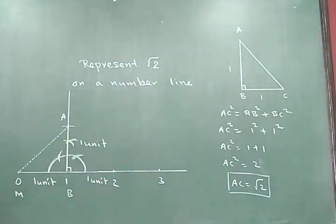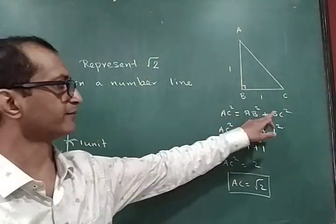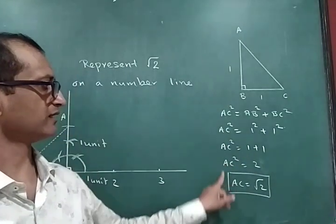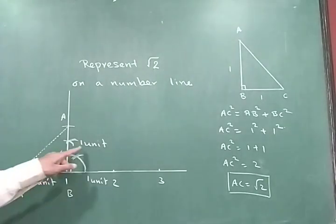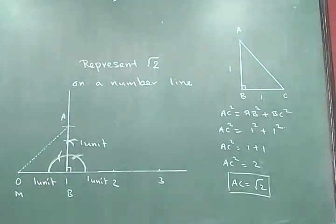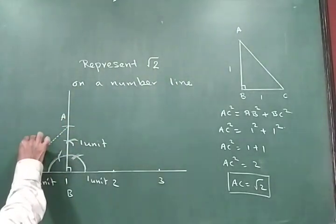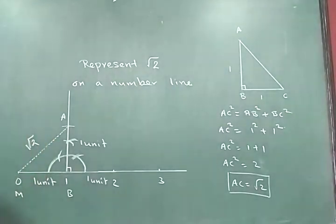So according to the Pythagorean theorem, if the value of AB and BC is 1 and 1, then the hypotenuse represents root 2. So in this case, if this is 1 unit and this is 1 unit, so automatically my hypotenuse represents root 2.